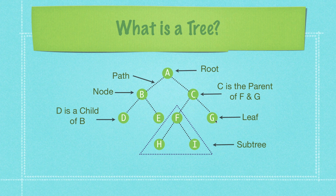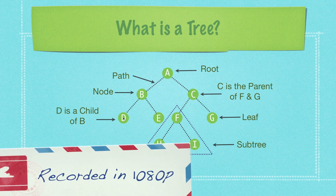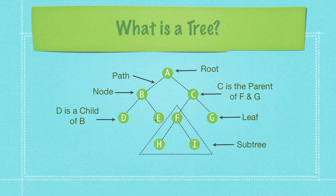A leaf is a node that does not have any children. A subtree would be anything like F, H, and I; C, F, and G; or B, D, and E. And of course, these are the children. So D as well as E would be children of node B.